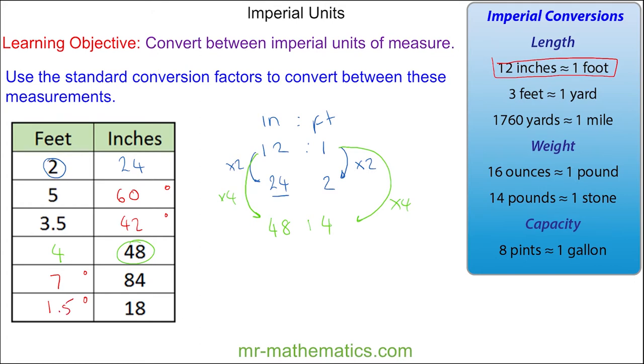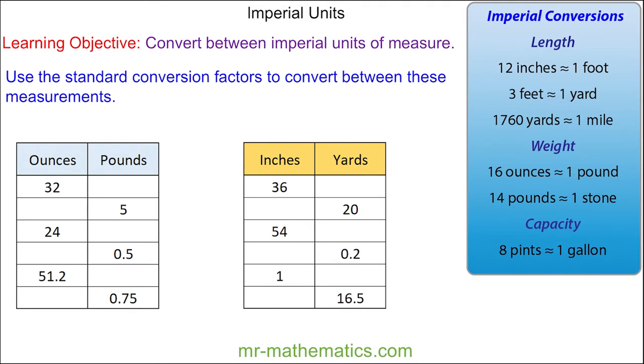Okay, let's try two more questions. To convert between ounces to pounds, we're going to use this conversion here, which again we can write as a ratio of ounces to pounds as 16 to 1.